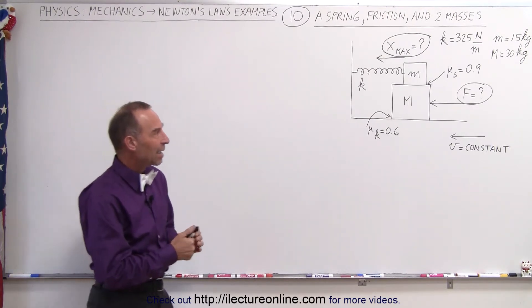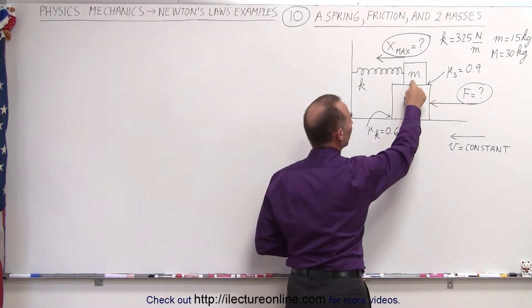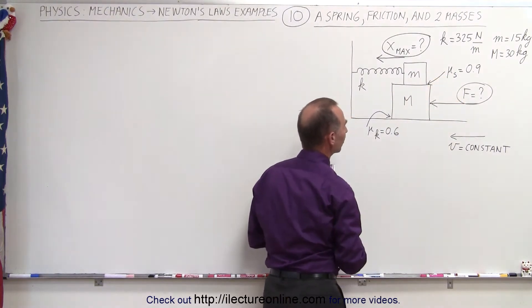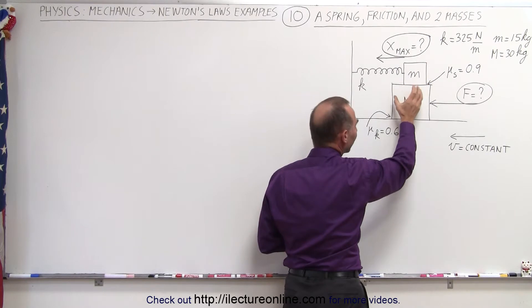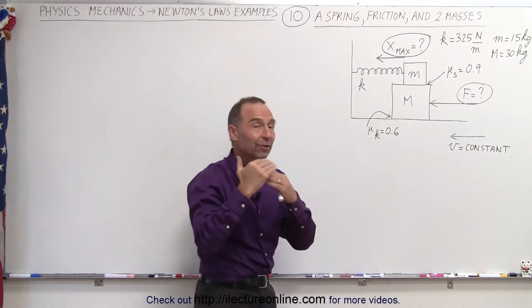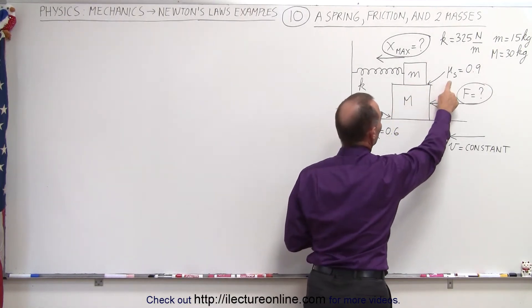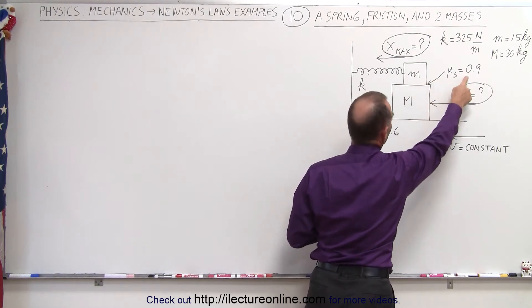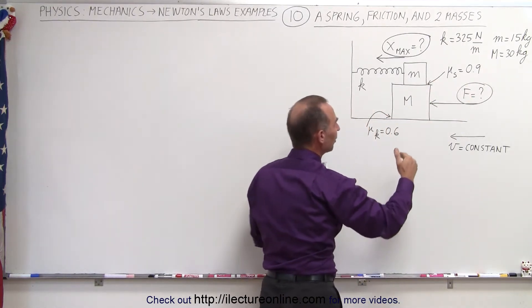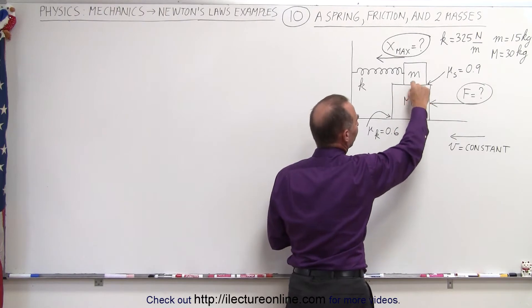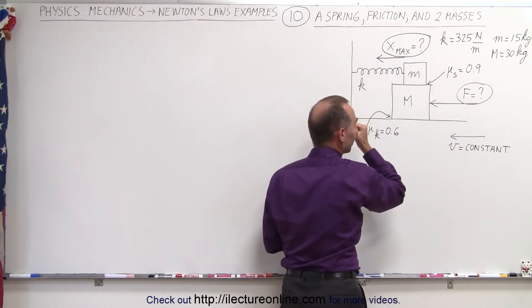What we have here is two objects: a big mass and a small mass, 30 kilograms and 15 kilograms. The small mass M is not attached to the big mass except for the fact that there's a coefficient of static friction between the two, which is actually quite high. So until we overcome that friction force between the two blocks, they will act as a single system.